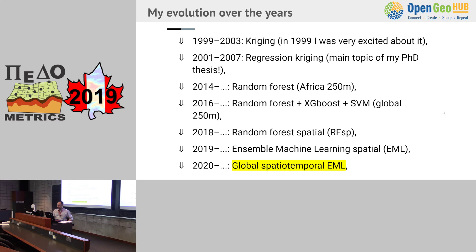My history: I started in 1999 very excited about geostatistics. I saw my first kriging lessons and thought it was amazing — you have samples, you generate maps, complex models. Then I started looking at regression kriging, combining kriging with remote sensing and DEM data. That became my main PhD thesis topic. I was also influenced by Harald Kouweling, whom I met for the first time then.